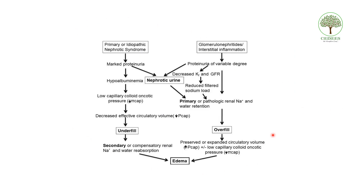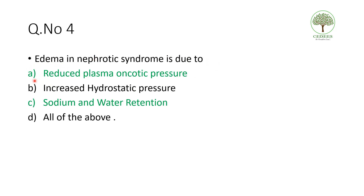In nephrotic syndrome there is marked proteinuria, leading to hypoalbuminemia, which results in hypercoagulability and edema. Because of hypoalbuminemia, there is reduced oncotic pressure and reduced circulatory albumin. Secondarily there is sodium and water retention. Nowadays it is believed that primarily there is sodium and water retention, which may be the primary cause of edema in nephrotic syndrome. The answer is reduced plasma oncotic pressure or sodium and water retention.